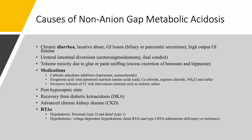We can have RTA with hypokalemia, which is type 2 or type 1 — proximal or distal — or it can be hyperkalemic: voltage-dependent and type 4 RTA. Please remember that if you have advanced chronic kidney disease, type 1 distal RTA, or hyperkalemic RTA, in all of these categories you have impaired distal acidification, meaning you have problems with urine ammonium — meaning you probably will have a positive urine anion gap. The only exception is proximal or type 2 RTA; in that case, you are going to have a negative urine anion gap, the same as you would have with diarrhea. You need history and context.